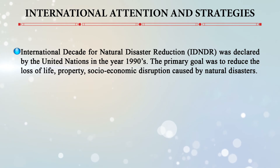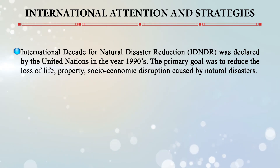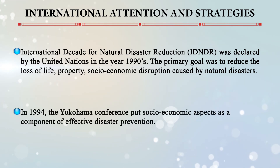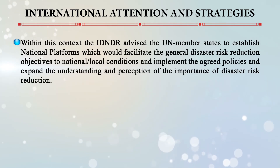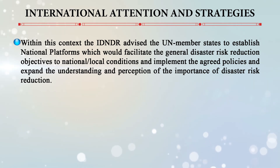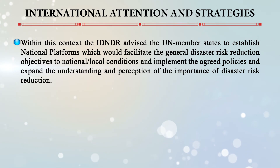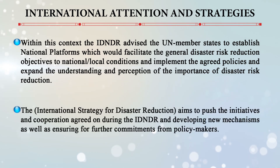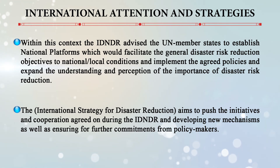Regarding international attention and strategies, the International Decade for Natural Disaster Reduction (IDNDR) was declared by the United Nations in the 1990s, with the primary goal of reducing loss of life, property, and socioeconomic disruption caused by natural disasters. In 1994, the Yokohama Conference placed socioeconomic aspects as a component of effective disaster prevention. The IDNDR advised UN member states to establish national platforms to facilitate disaster risk reduction objectives, cater to national and local conditions, implement agreed policies, and expand understanding of the importance of disaster risk reduction.